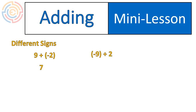If I start with negative 9 and then I add 2, I would end up at negative 7. So seeing these two examples helps us to know this rule.